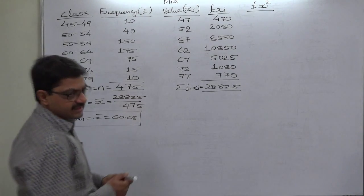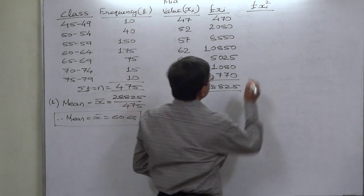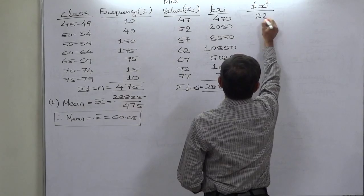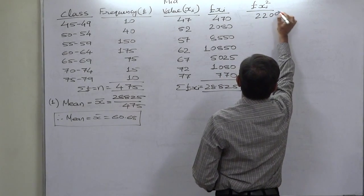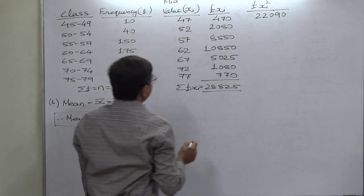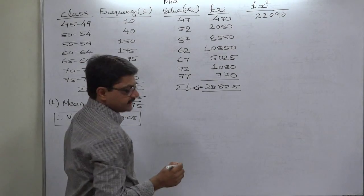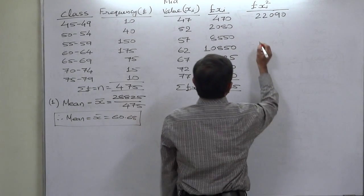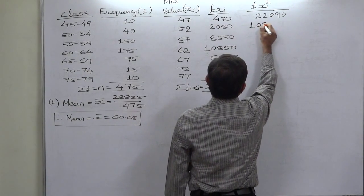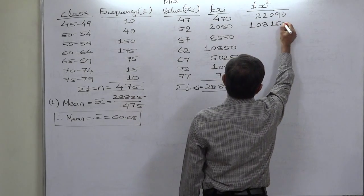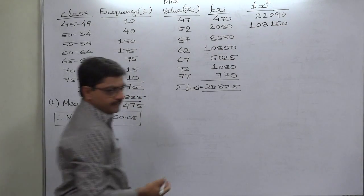47 into 470, 22,090. 52 into 2080, 108,160.